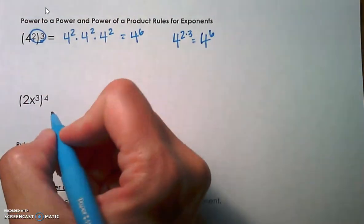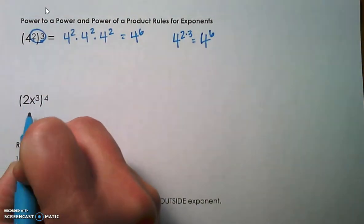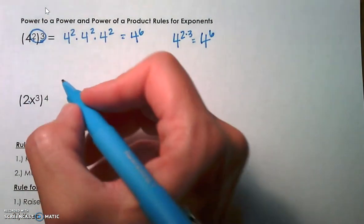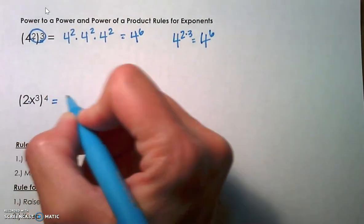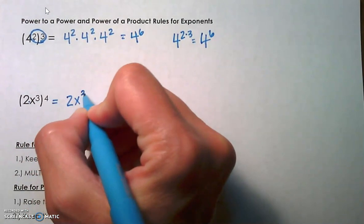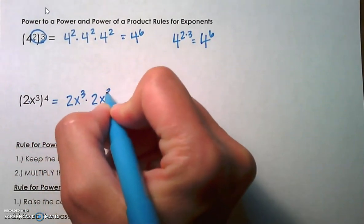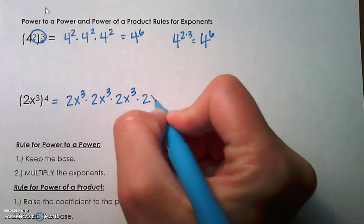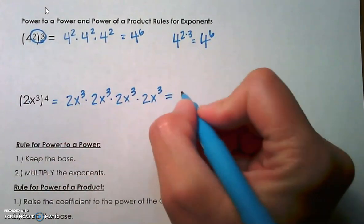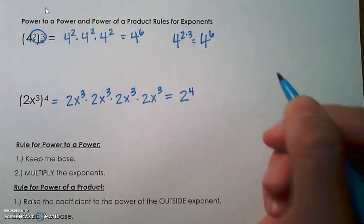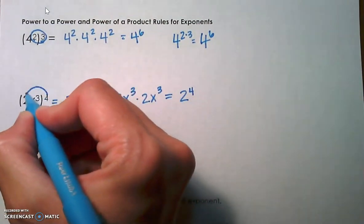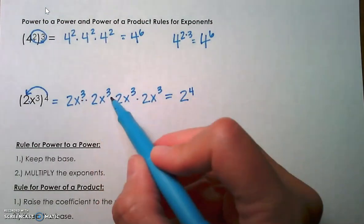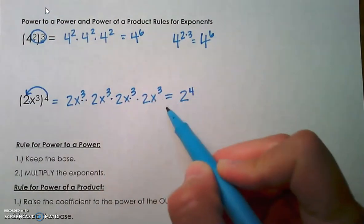Now let's go to power of a product. We've got a product inside these parentheses — the 2 and the x cubed are each factors. The 4 outside is telling 2x cubed to be used as a factor 4 times. We're going to write that out in expanded form so we can see why the rule works. Notice there are four 2's used as factors, so that's 2 to the 4th power, which tells us that the 4 gets distributed to the 2 as an exponent.